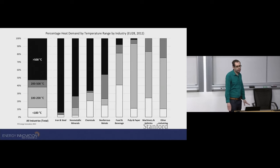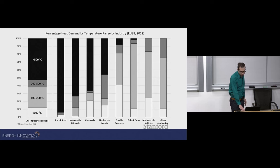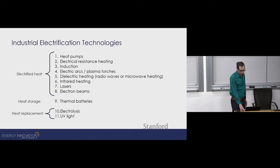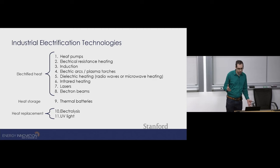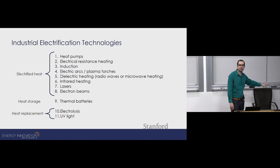So really, when we're talking about decarbonizing industrial use of fossil fuels for energy, we're talking about heat — how do you provide industrial process heat without emissions? And if you're talking about heat, the next question is temperature. Different industries require heat at different temperatures, and the fortunate thing is that we have a range of electrified technologies that can deliver heat at these temperatures.